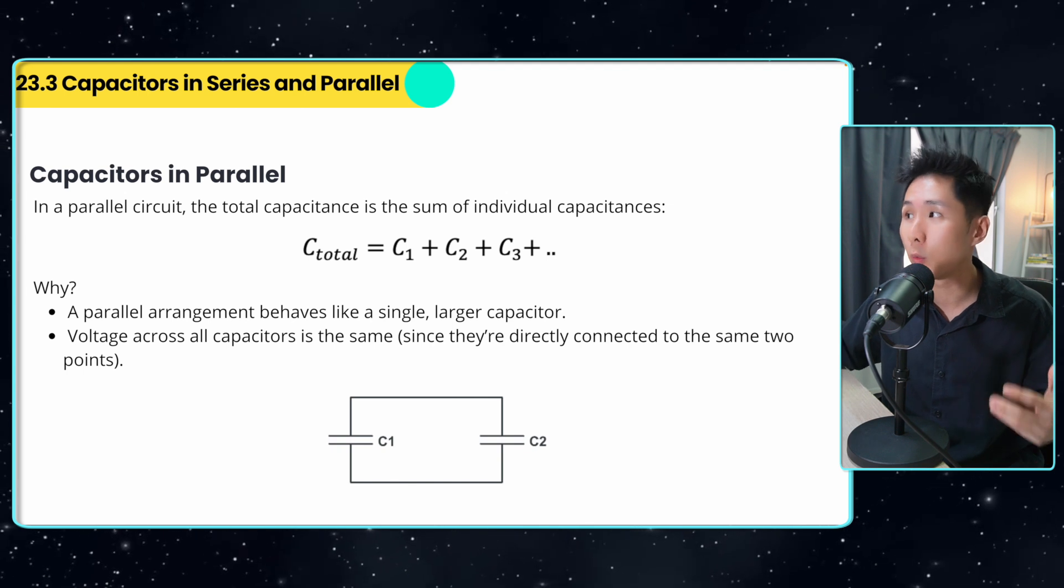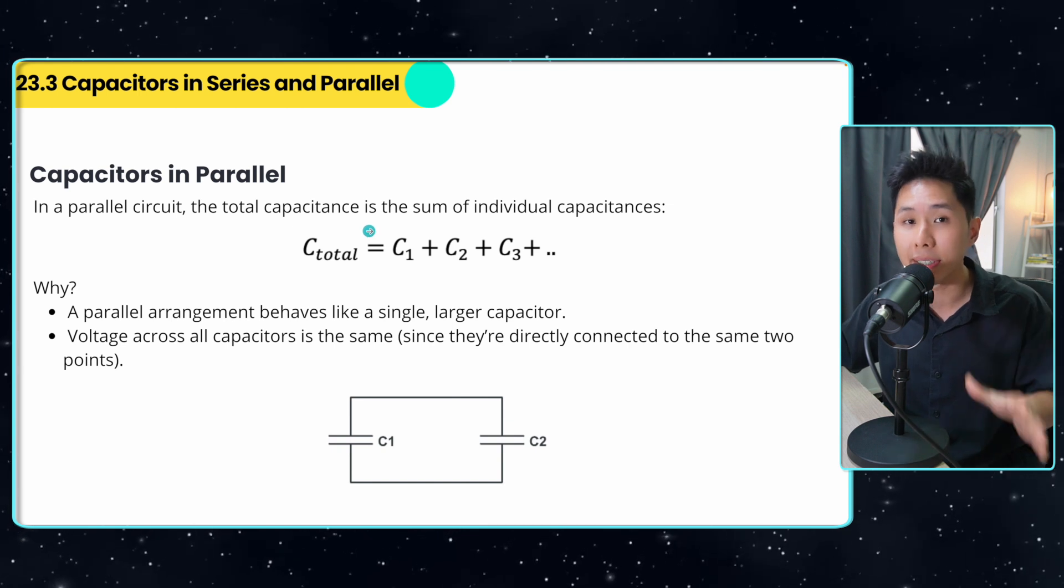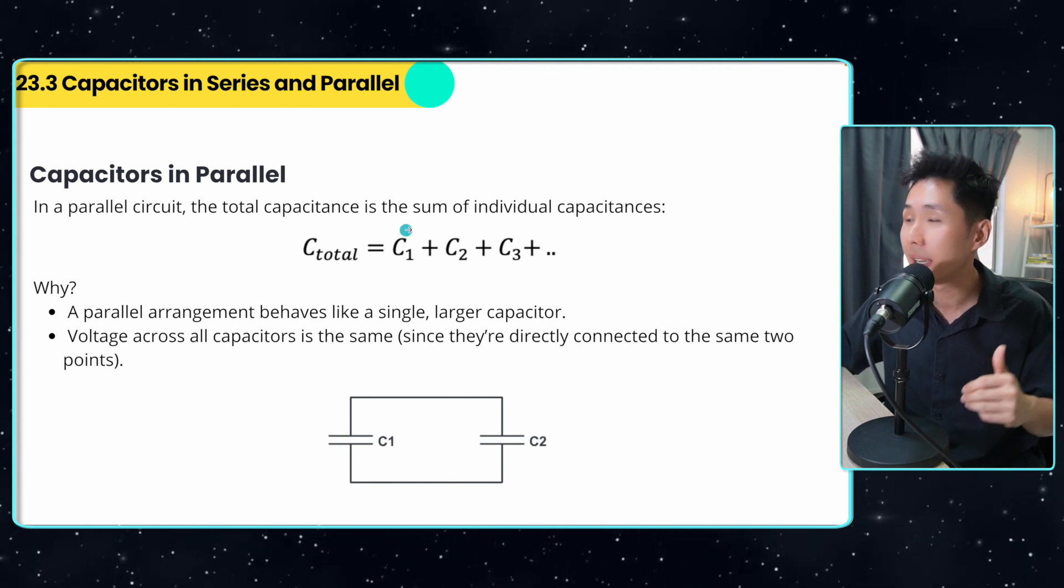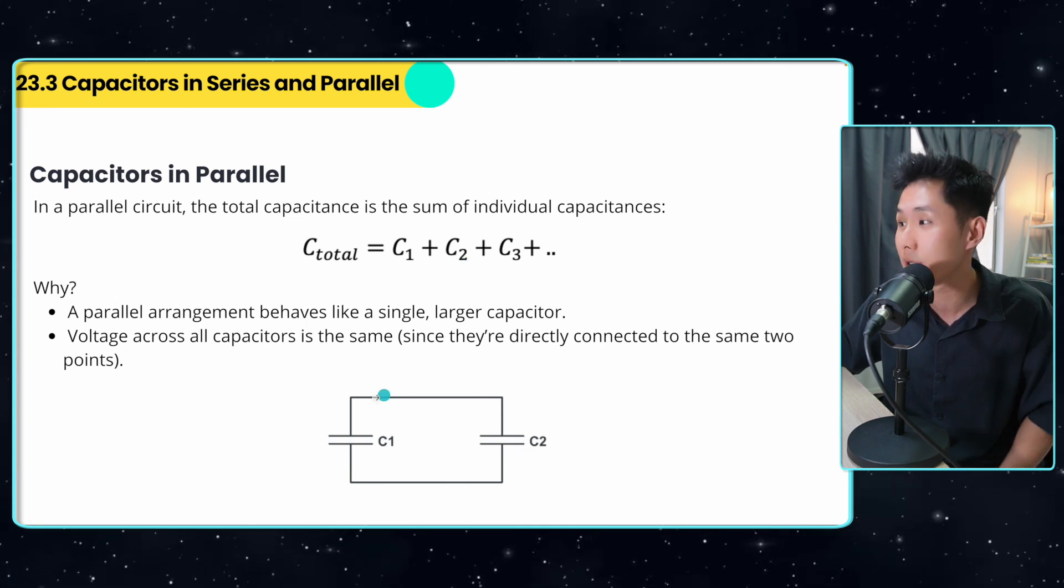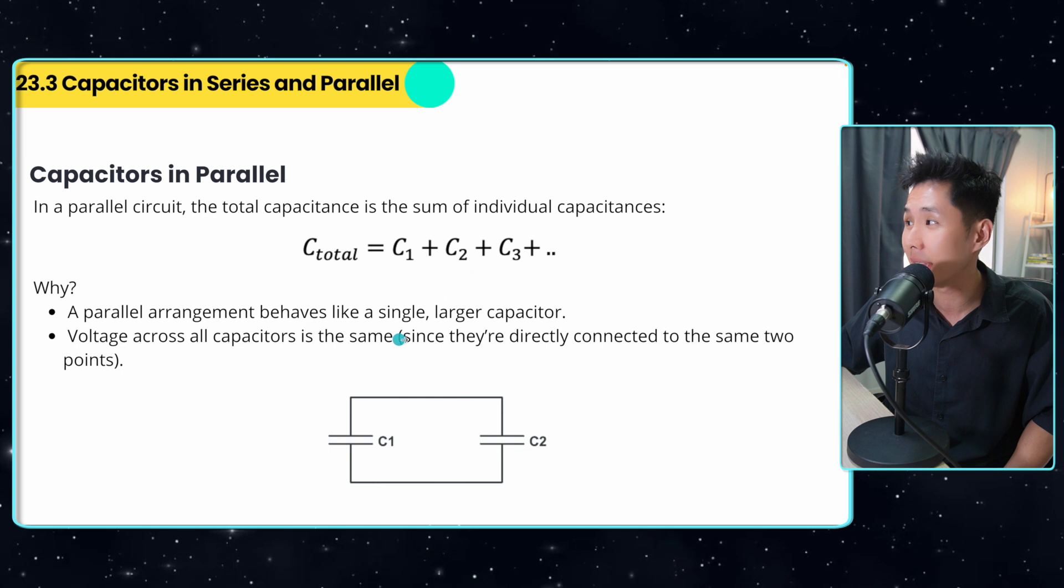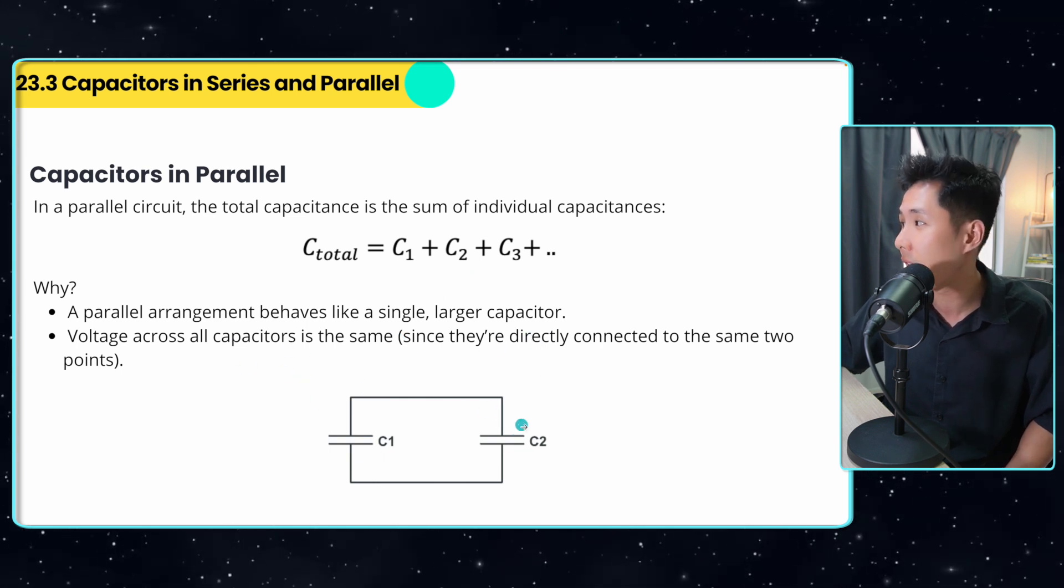In the next part of the video, we're now going to look into what happens when capacitors are combined. So in a parallel circuit, the total capacitance is the sum of individual capacitance. So it's very easy, you just add them up.